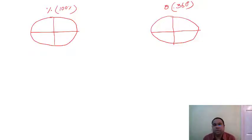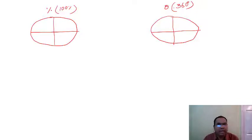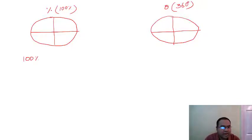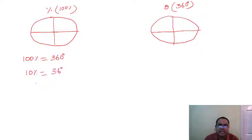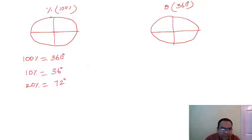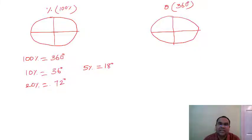You may come across one, two, or three pie charts, in percentage or degrees or both. Now, 100% equals 360 degrees. So 10% equals 36 degrees, 20% equals 72 degrees, and 5% — which is half of 10% — equals 18 degrees.